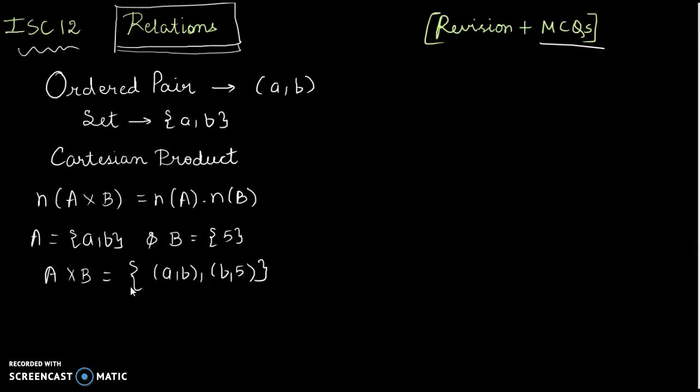We will start with the very basic thing: the ordered pair. This is how we denote an ordered pair — a set with elements (a, p) in curly braces. Whenever they ask you Cartesian product, it means n(A×B) = n(A) × n(B). Now A has elements a and b, B has only 5. When we do A×B, we get (a,5) and (b,5), so the total number of elements in A×B is two.